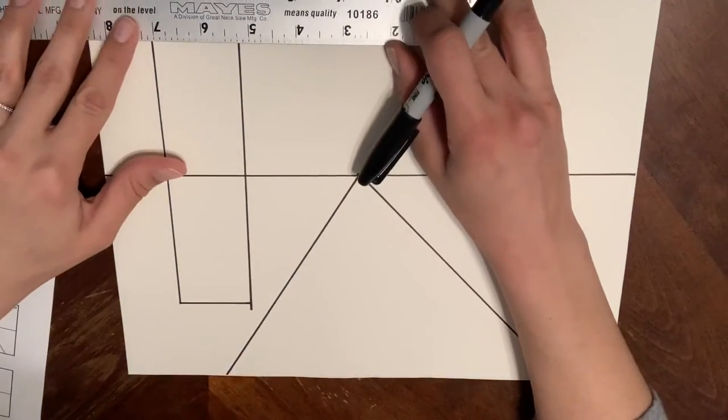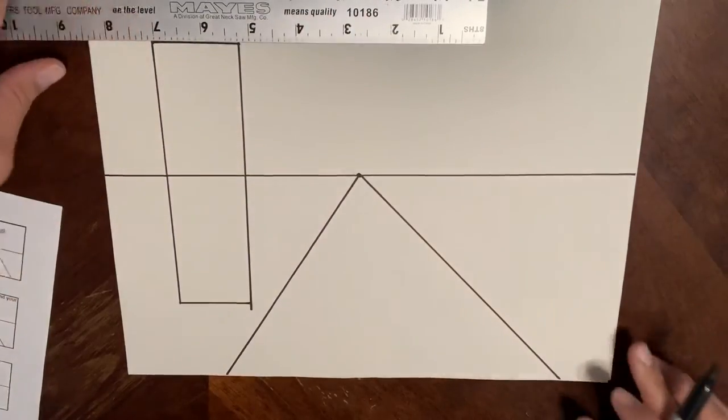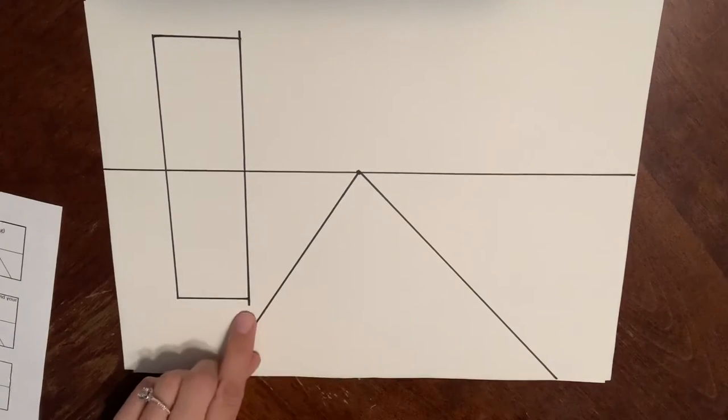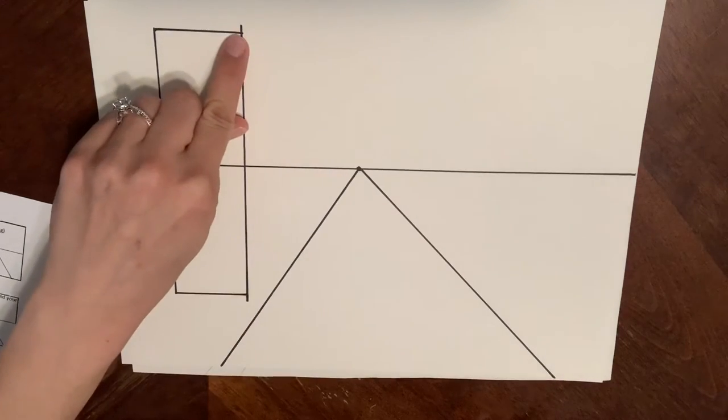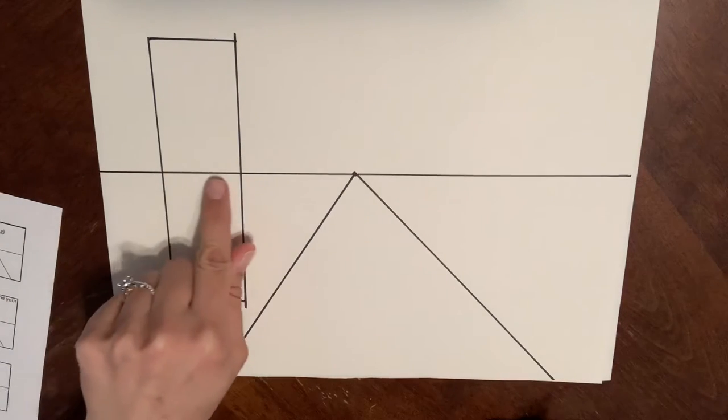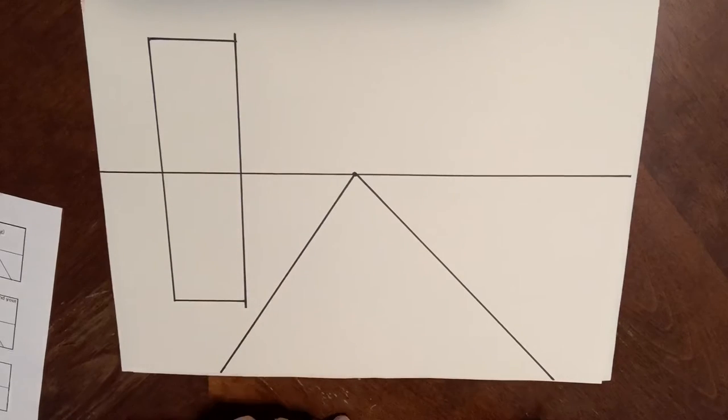So here I created my rectangle. I'm just drawing in sharpie so you can see my lines clearly in the video. Now I would erase these little extra lines here for my rectangle. I'd also erase the line going through the building because we don't have x-ray vision. We can't see that horizon line, so I would also erase that if I could.